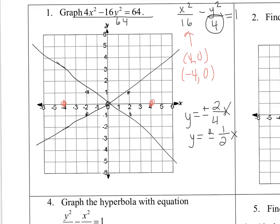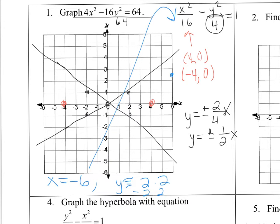To get more exact points, plug in a number for x. Since the vertex is at negative 4, plug in x equals negative 6. Solving gives y equals the square root of 5, approximately 2.2. Since we took the square root, it's plus or minus 2.2. Using symmetry, this gives four points: (6, 2.2), (6, -2.2), (-6, 2.2), and (-6, -2.2). Use these to draw both branches of the hyperbola.